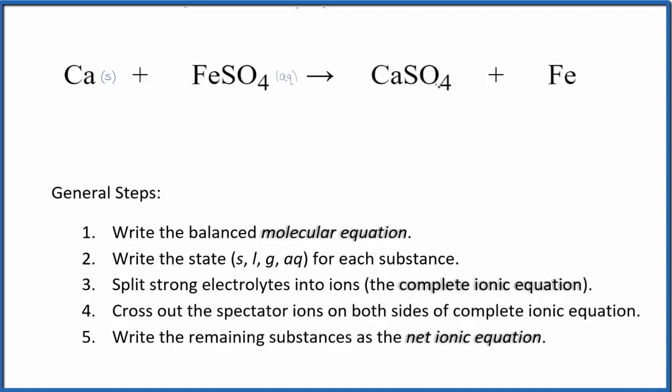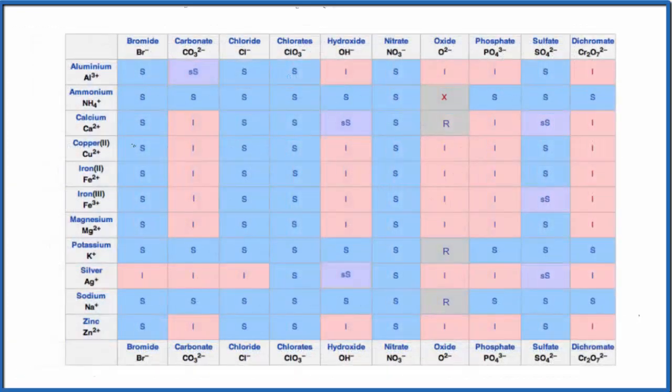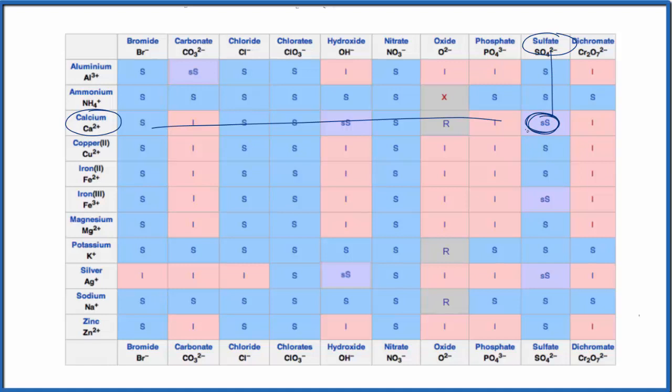For calcium sulfate, though, let's look that up. That might be an exception. So in our solubility chart, we find calcium here and then the sulfate ion. So let's go across and then down. And that's SS, that's slightly soluble. A little bit of it will dissolve, but not very much. For the purpose of net ionic equations, when it's slightly soluble, we consider that to be insoluble.